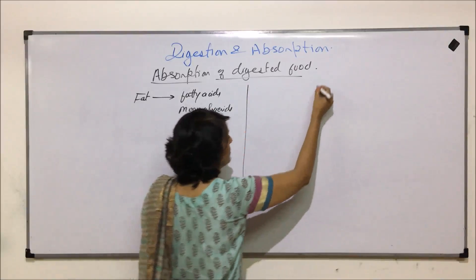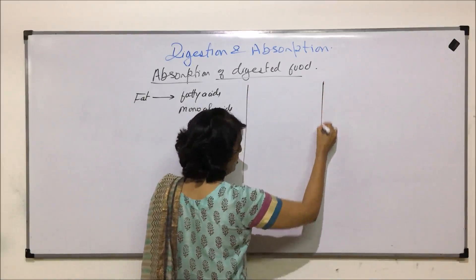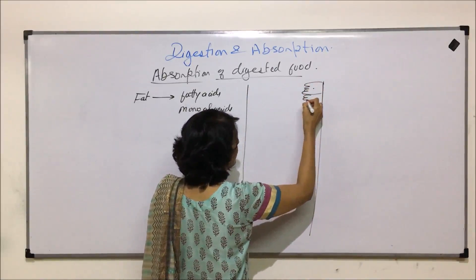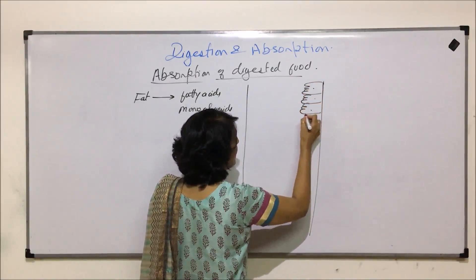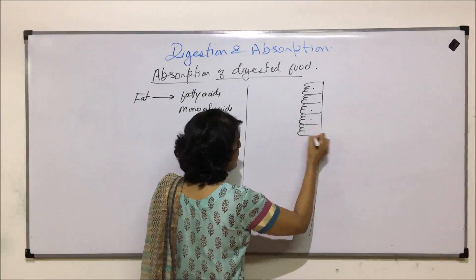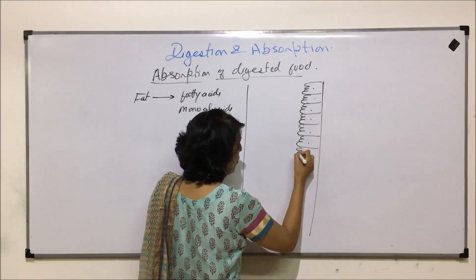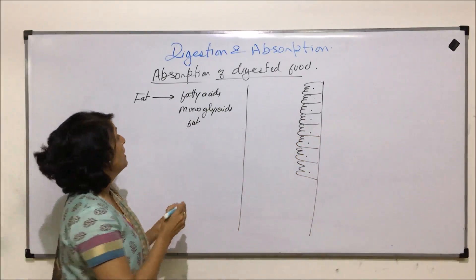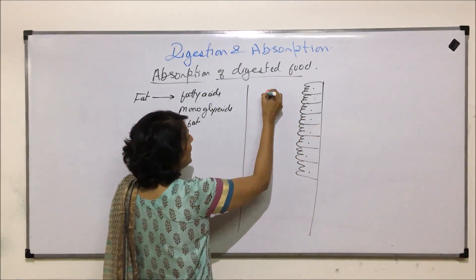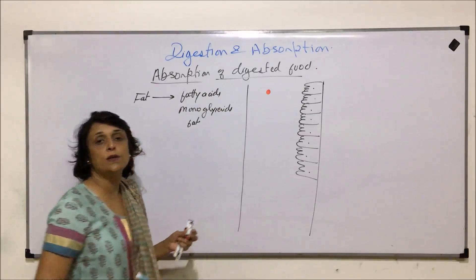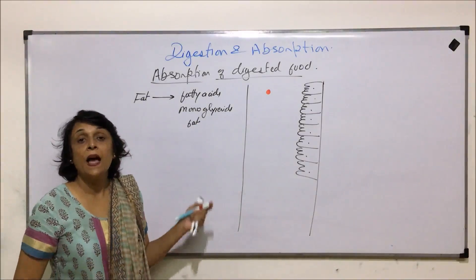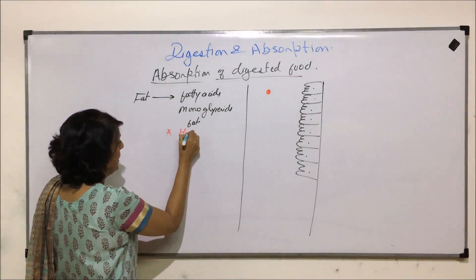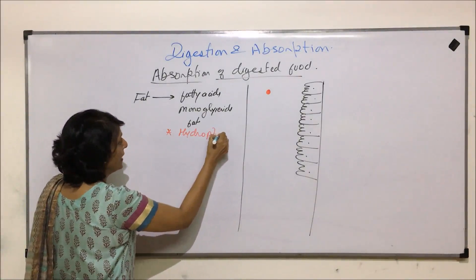Let us draw this elementary canal showing the brush-bordered epithelium, because these cells play a very significant role in the absorption of these substances. Fatty acids and monoglyceride fats are hydrophobic molecules — they are hydrophobic.